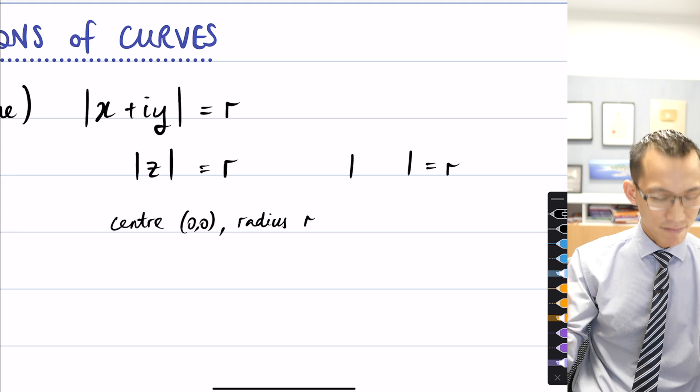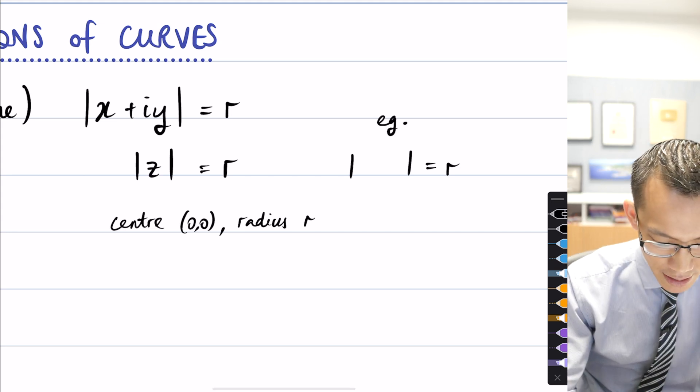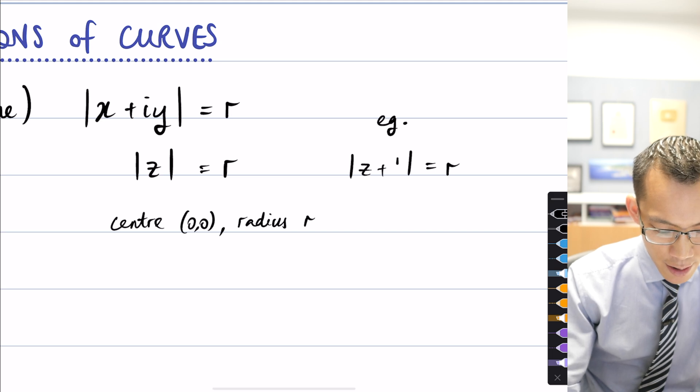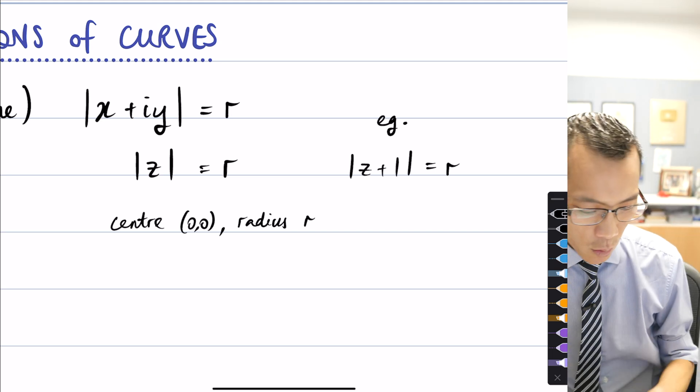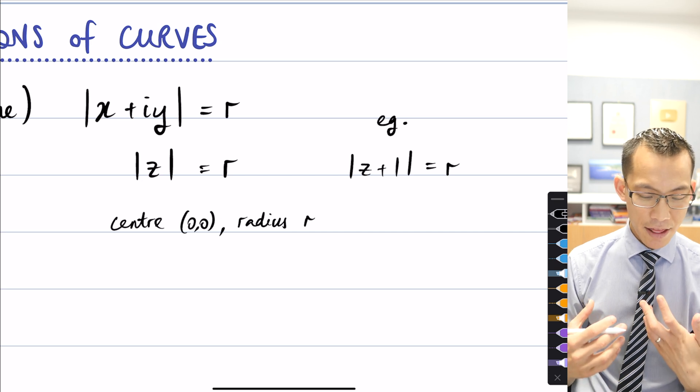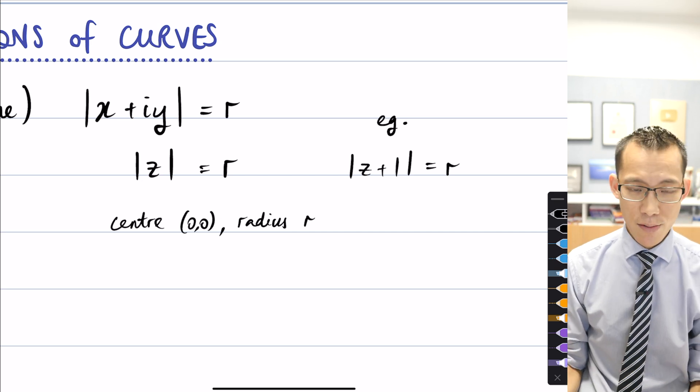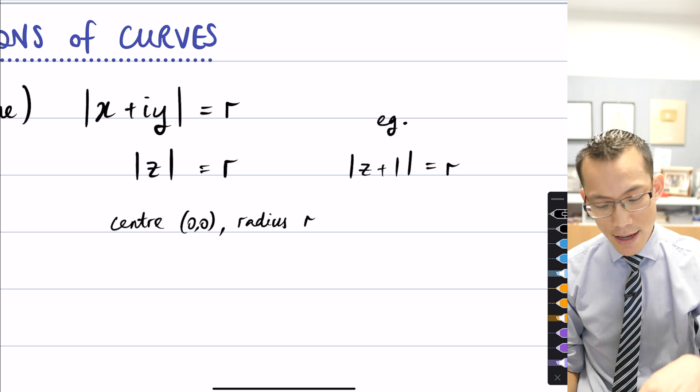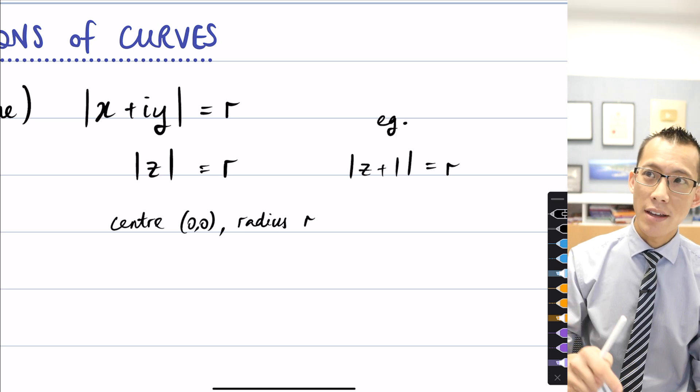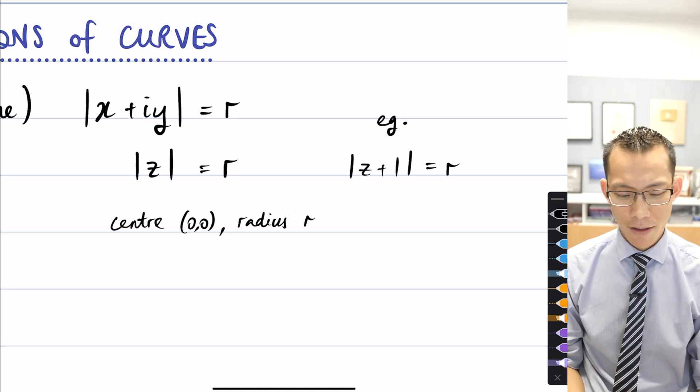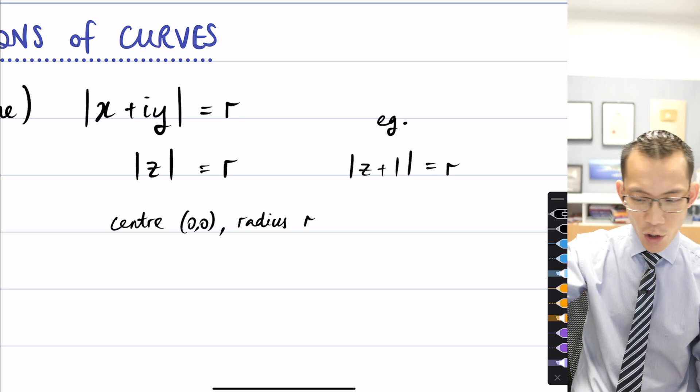Like z plus 1 wouldn't it be? Yeah, okay, so let's just do that as an example. If I said z plus 1, what you're doing is you're no longer measuring the modulus from 0,0, you're measuring the modulus from, in this case, it would be the point negative 1 on the real axis.